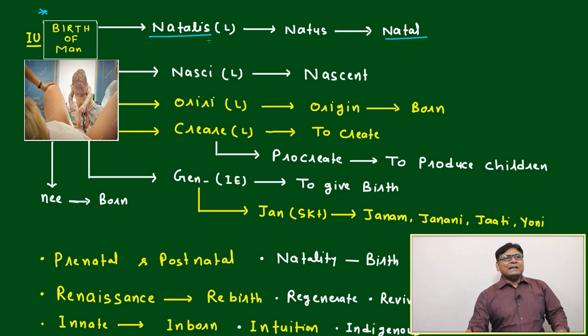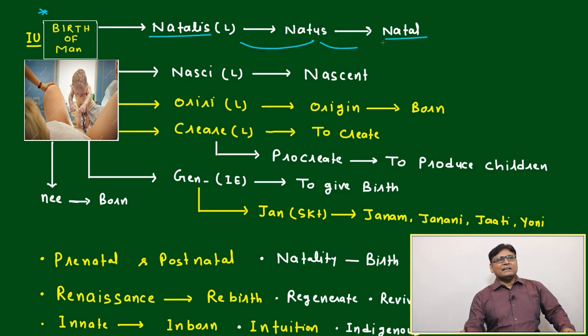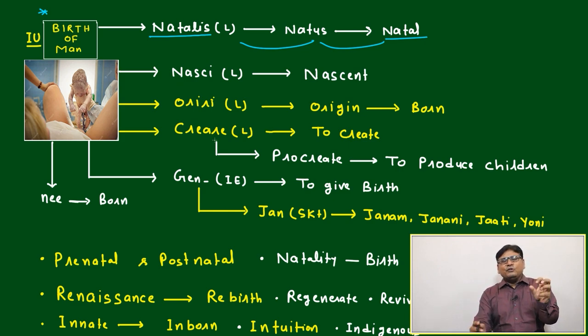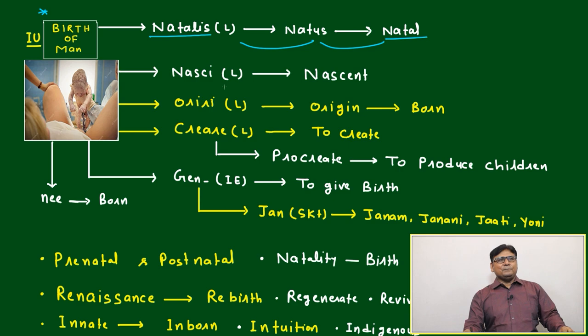The Latin word 'natalis', based on that it gives us 'natus', and so many origins are there. Based on that, we will be able to define more than 100 words very easily. Afterwards, another word is there.